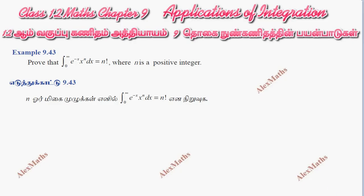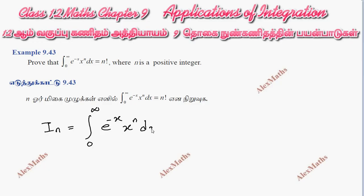Hi students, this is Alex here. Example 9.43. This is I_n — this is the integral from 0 to infinity of e to the power minus x, times x to the power n, dx.